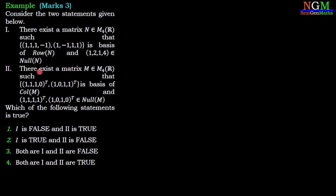Second statement: There exists a matrix M belonging to M₄(R) such that {(1,1,1,0)ᵀ, (1,0,1,1)ᵀ} is a basis for the column space of M, and (1,1,1,1)ᵀ and (1,0,1,0)ᵀ belong to the null space of M.